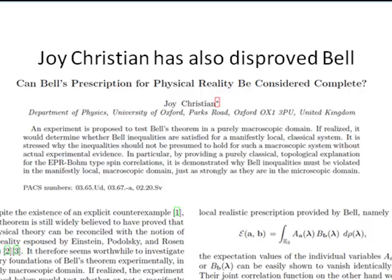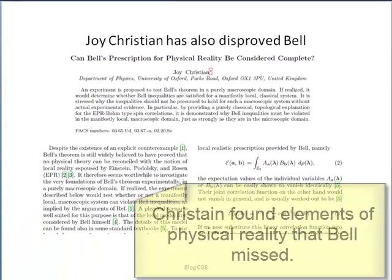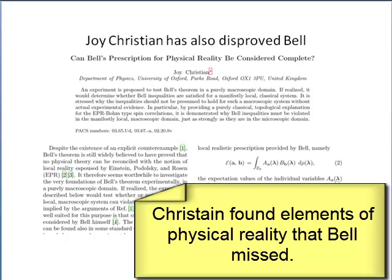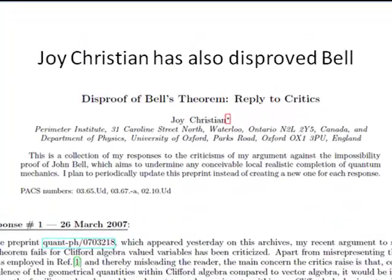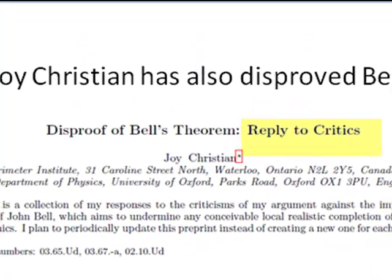Here is another paper in which he shows that Bell's choice of physical reality is incomplete. The most important point is that there are situations when classical variables do not commute, whereas Bell's always do. Christian finds more elements of physical reality, and these are exactly the ones that Bell missed. And yes, he has had his critics too, but he has replied to them all.